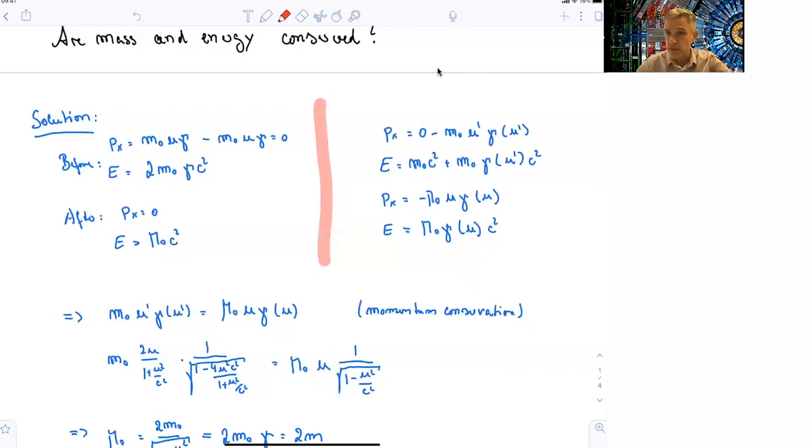In the laboratory frame, the situation is different. There is x momentum 0 minus m times u prime. This is a different velocity times gamma of u prime. So here, I'm trying to indicate that this gamma is not the same gamma as over here. This is a gamma where the velocity is u prime.